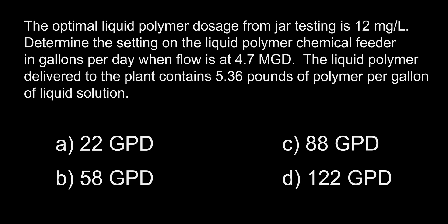Determine the setting on the liquid polymer chemical feeder in gallons per day when flow is at 4.7 MGD. The liquid polymer delivered to the plant contains 5.36 pounds of polymer per gallon of liquid solution. A: 22, B: 58, C: 88, D: 122.